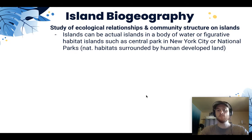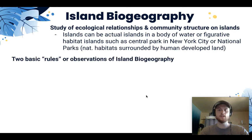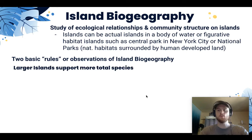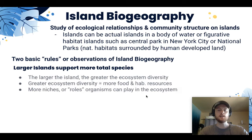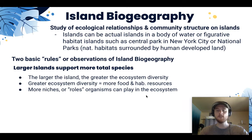There are two main observations or ideas that go into island biogeography. The first is that larger islands will support more total species — they'll have a higher species richness. This is because when an island is larger, it has more ecosystem diversity, which means there are more food and habitat sources that can support a wider variety of species. It also means there are more niches, or more ecological roles available, so a wider variety of species can survive on that island.